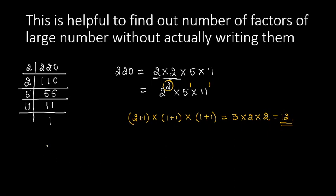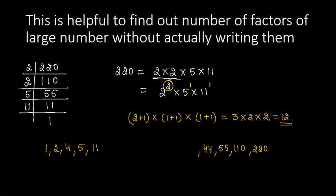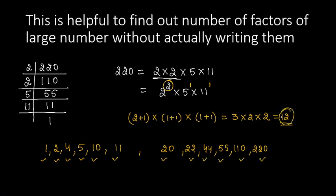Let's write the factors of 220. 1 and 220 are always factors. Next, 2 times 110 is 220, so 2 and 110 are factors. 4 times 55 gives 220, so 4 and 55 are factors. 5 times 44 gives 220, so 5 and 44 are factors. 10 times 22 gives 220. Furthermore, 11 times 20 gives 220. Counting the factors: 1, 2, 3, 4, 5, 6, 7, 8, 9, 10, 11, and 12. So in total, there are 12 factors of 220.